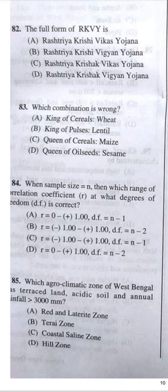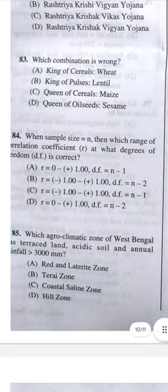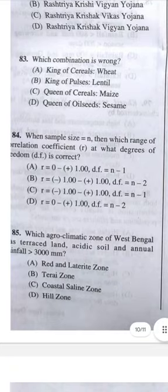Question 84: When sample size is n, the range of correlation coefficient r and degree of freedom — answer B: r ranges from -1 to +1, and degree of freedom is n minus 2.